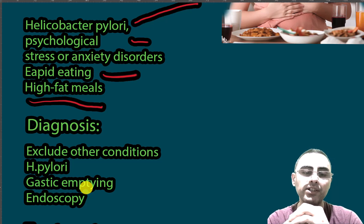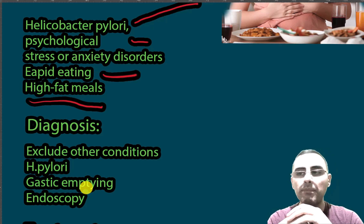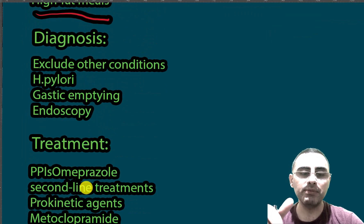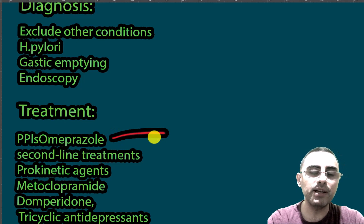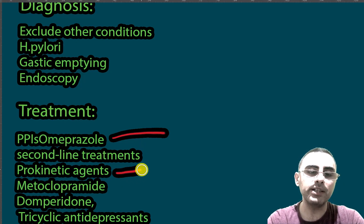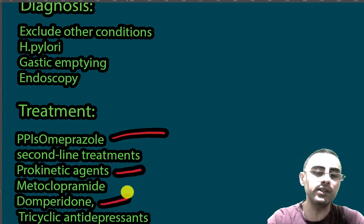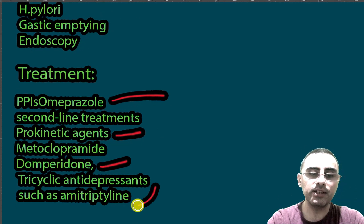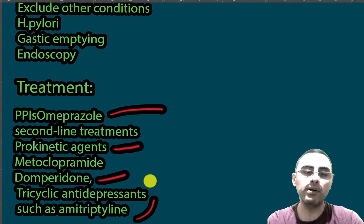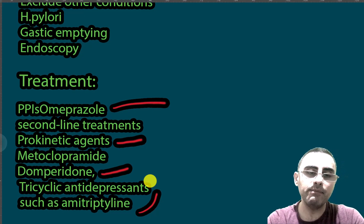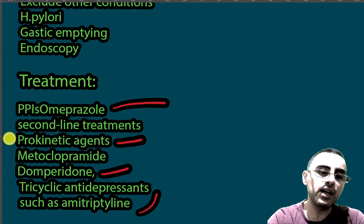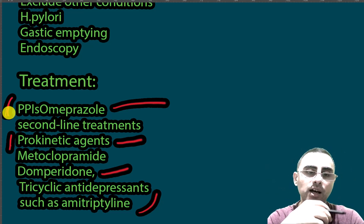Diagnosis is based on the clinical picture and excluding other conditions such as Helicobacter pylori infection, gastric emptying disorders, peptic ulcer, and gastritis via endoscopy. First-line treatment is proton pump inhibitors such as omeprazole. If omeprazole is not effective, prokinetic agents such as metoclopramide and domperidone are used. Tricyclic antidepressants such as amitriptyline are also sometimes used. If there is delayed gastric emptying, prokinetic agents are usually more effective.